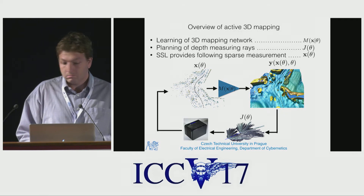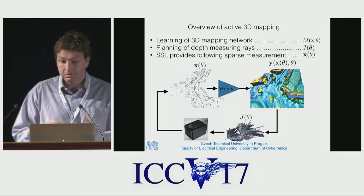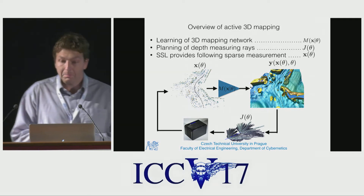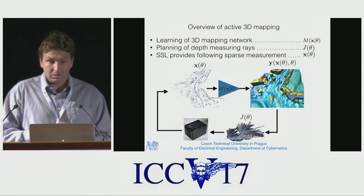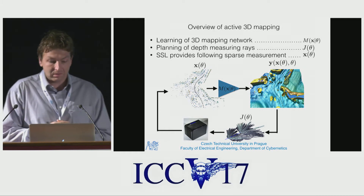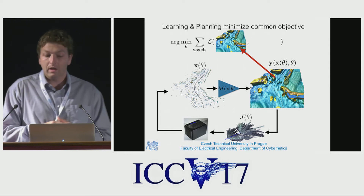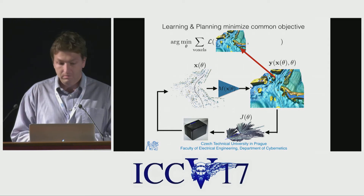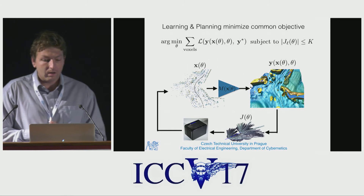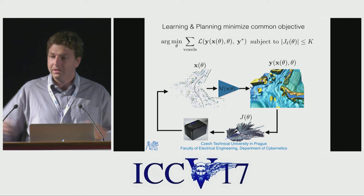The solid-state LIDAR measures depth along planned rays and provides sparse depth measurements. Since planning is a deterministic function of the currently available map, these sparse measurements are uniquely determined by parameters theta. Both learning and planning minimize a common objective function — logistic loss between the reconstructed map and some ground truth map — subject to budget constraints on the number of rays we can cast along the expected vehicle trajectory.